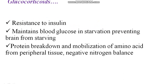Glucocorticoids produce resistance to insulin, meaning peripheral tissues have reduced ability to take up glucose. It maintains blood glucose levels during starvation and prevents the brain from starving. During starvation, blood glucose levels are maintained by glucocorticoids, enabling the brain to survive and continue to receive glucose during that period.